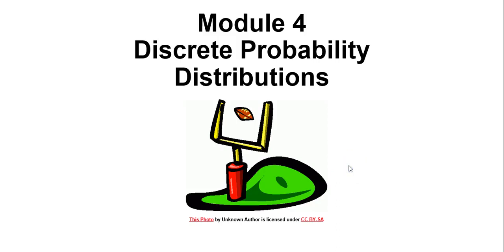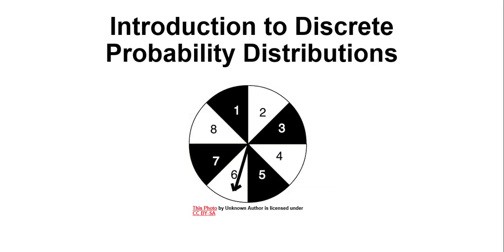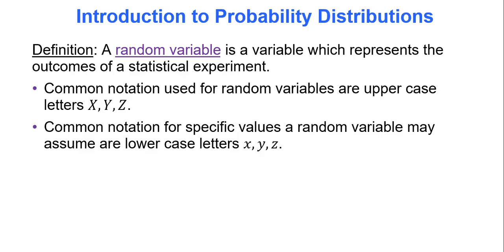Hello there. In this video we will discuss Module 4, Discrete Probability Distributions. Our first stop is going to be an introduction to these types of distributions. When I say discrete probability distributions, we are talking about looking at all the possible outcomes of an experiment and their corresponding probabilities.